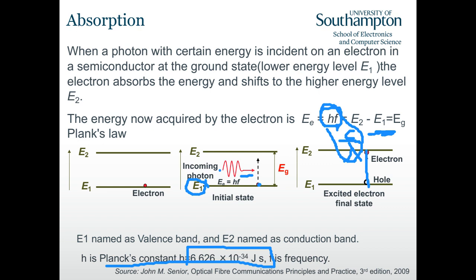When you receive this energy, you just happen to be able to jump onto the conduction band. When the electron jumps onto the conduction band, it means the bond is no longer stable and this electron is free - it becomes a free electron. It can stimulate electricity, and then by measuring the electricity we can infer how high the optical signal power is.